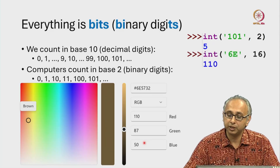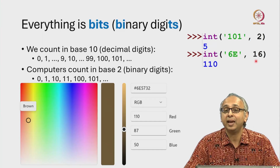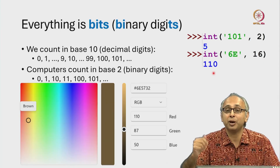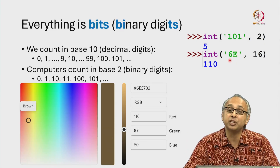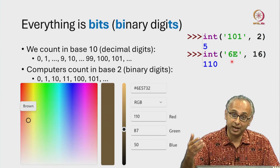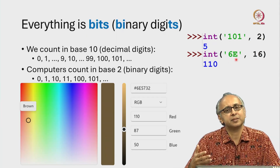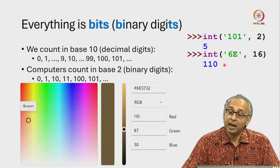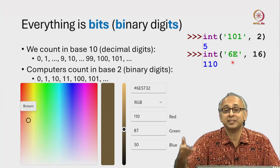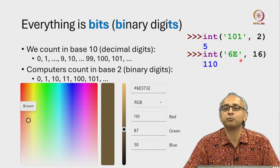You can check this in the REPL: give it the string 6E — hexadecimal digits 6 followed by E — and say treat this as something in base 16, and it will tell you that for a human comfortable with decimal, that is the number 110. Just like decimal digits are 0 through 9, hexadecimal digits are 0 through 9 plus A, B, C, D, E, and F. So 6E plus 1 is 6F, and after 6F there are no more hexadecimal digits, so just like 69 goes to 70, after 6F comes 70.